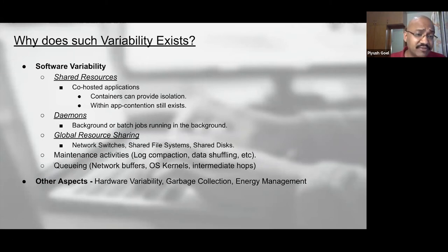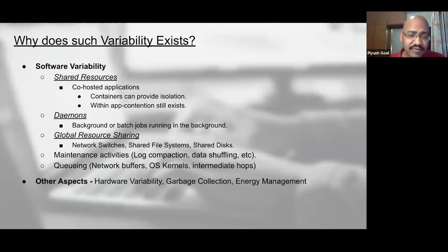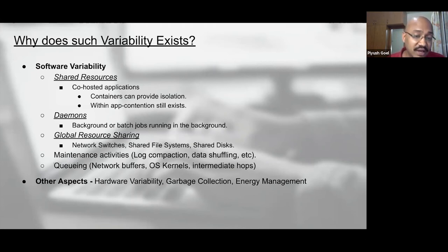Different levels of queues in your environment — network-level queues, TCP queues, OS kernel queues, and intermediate hops among racks — also contribute to variability. One particularly notable factor, familiar to anyone who's worked with garbage-collected or virtual-machine-managed languages like Java or Golang, is that garbage collectors run as background processes that can starve your application of CPU and add significant variability to the system.